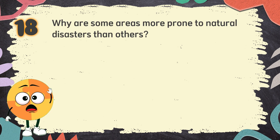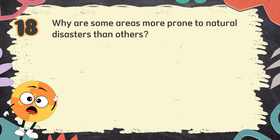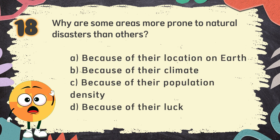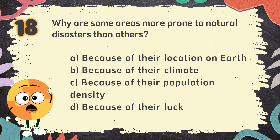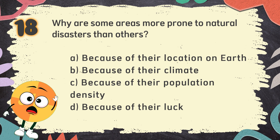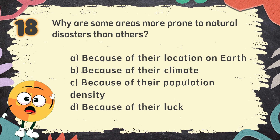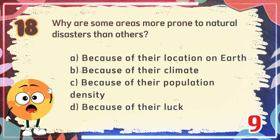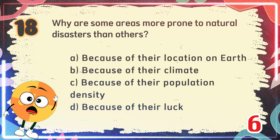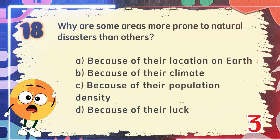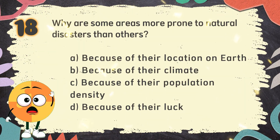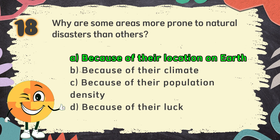Number 18. Why are some areas more prone to natural disasters than others? The choices are: A. Because of their location on earth, B. Because of their climate, C. Because of their population density, D. Because of their luck. The correct answer is A. Because of their location on earth.